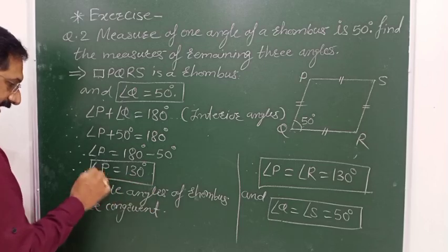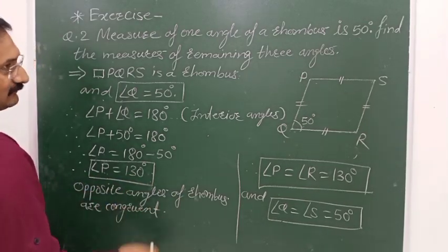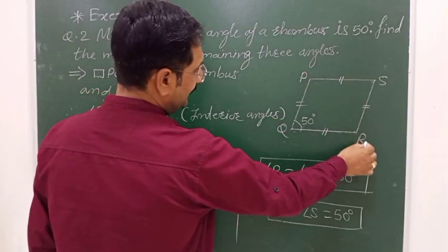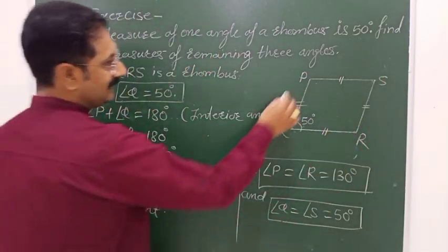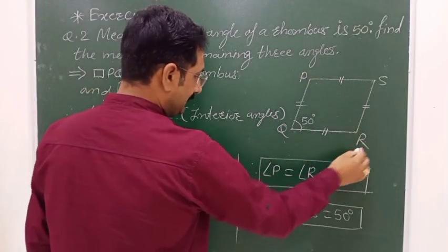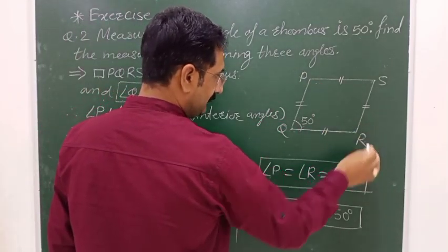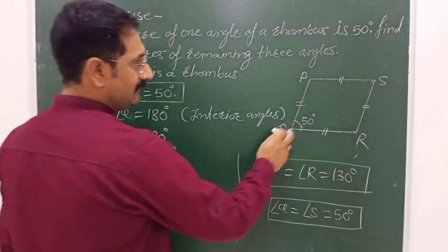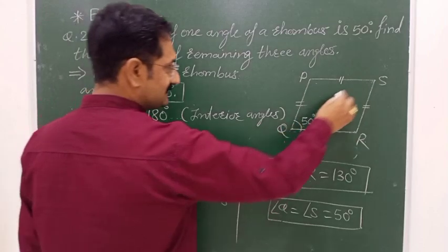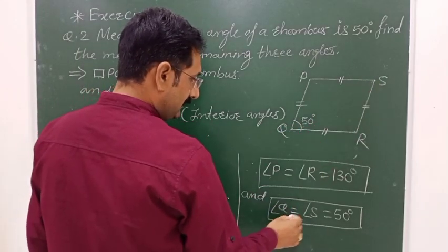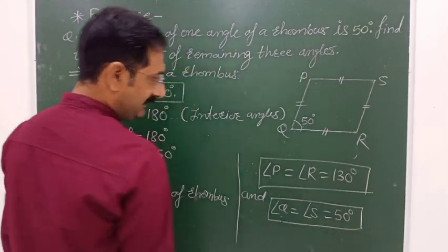Therefore, angle P equals 180 minus 50 equals 130 degrees. Since opposite angles of a rhombus are congruent, angle P equals angle R equals 130 degrees. Similarly, angle Q equals angle S equals 50 degrees.